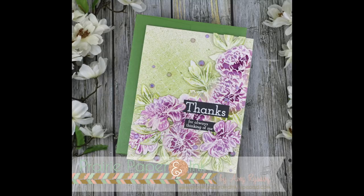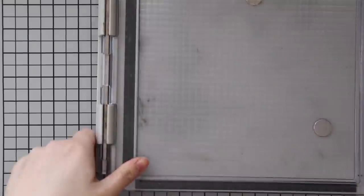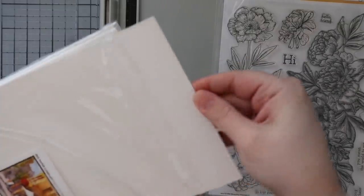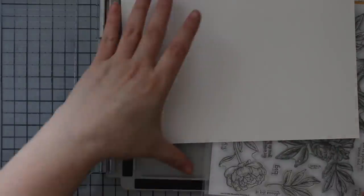Hello everyone, Amy here with Prairie Paper and Ink. For today's video, I'm finally getting a card made for this week's Color Throwdown Challenge. I pulled out Simon Says Stamp's Beautiful Flowers Too stamp set. I've used the first one many times and this one I've used many times as well.